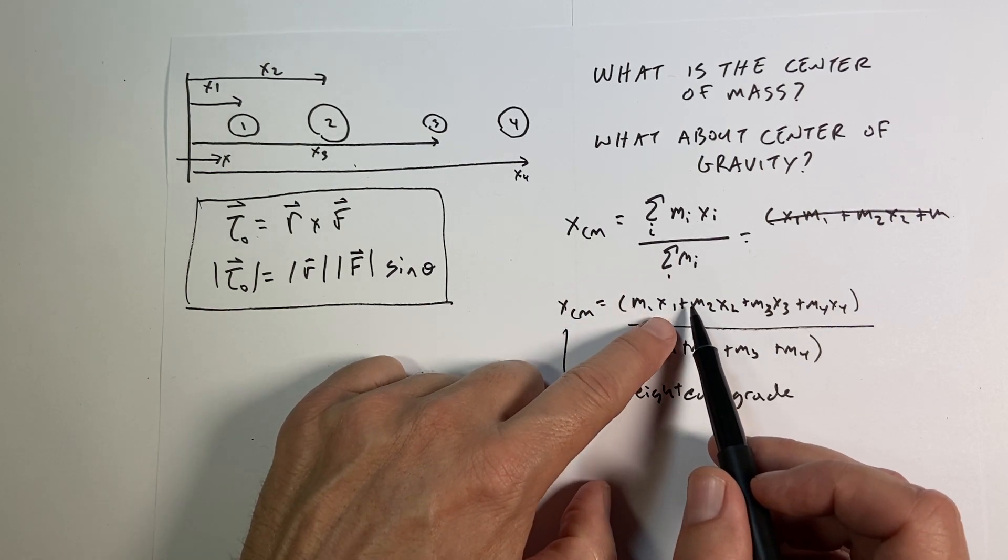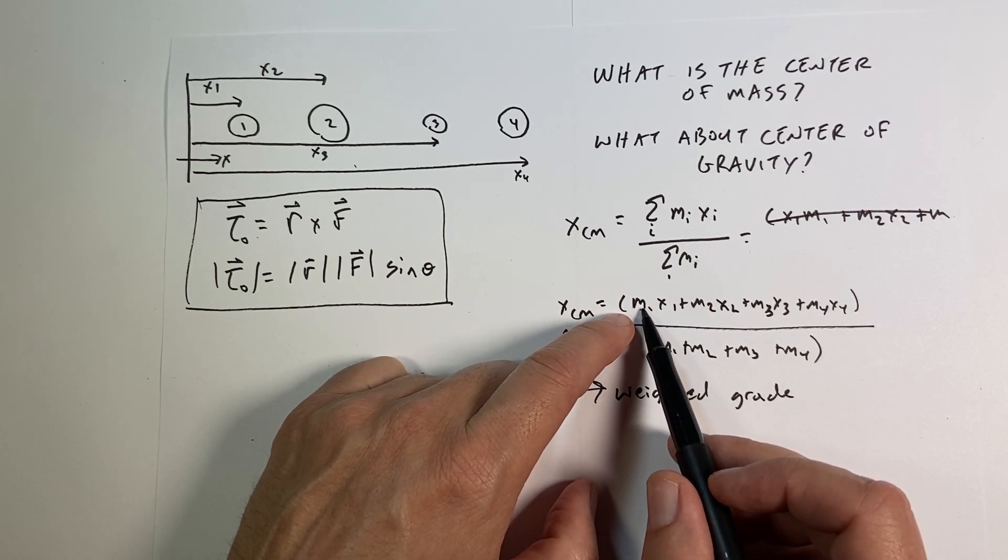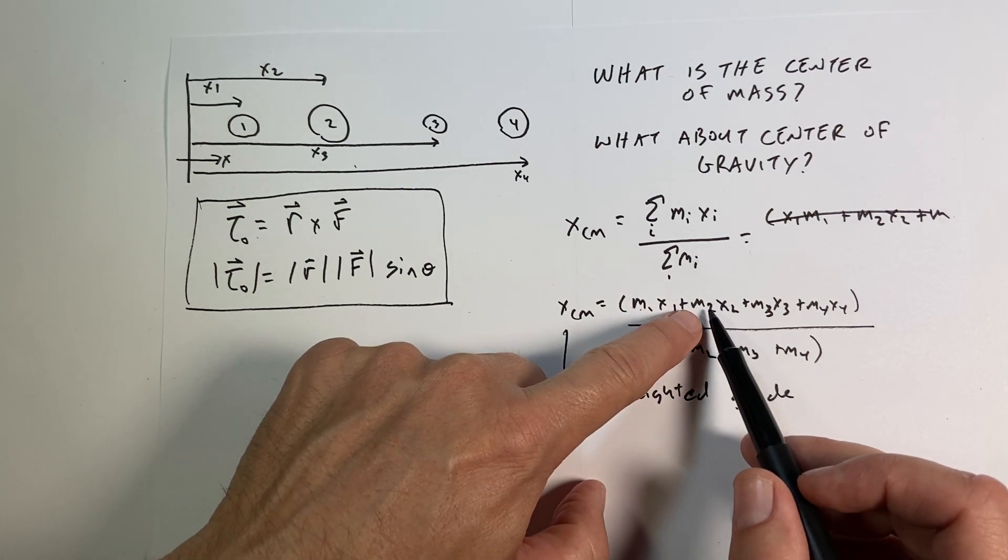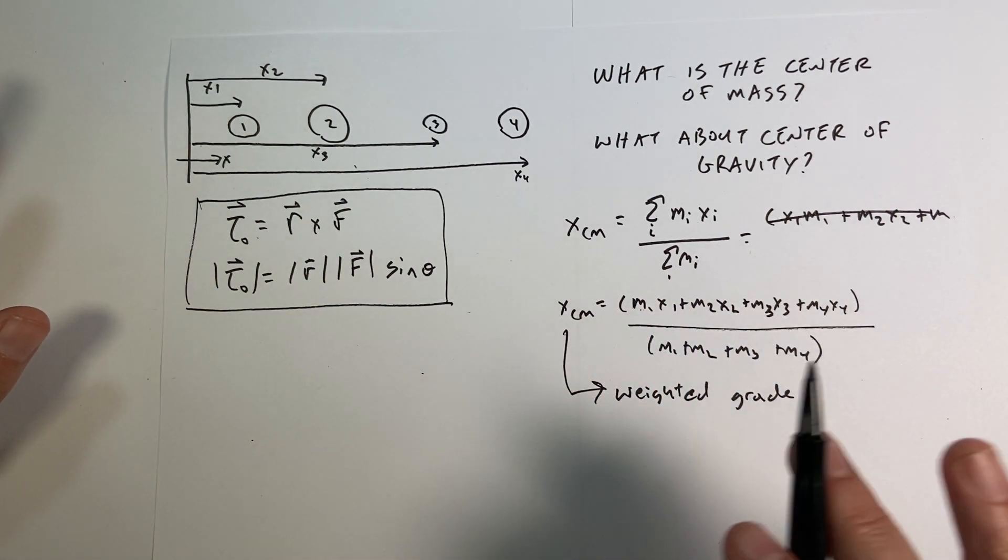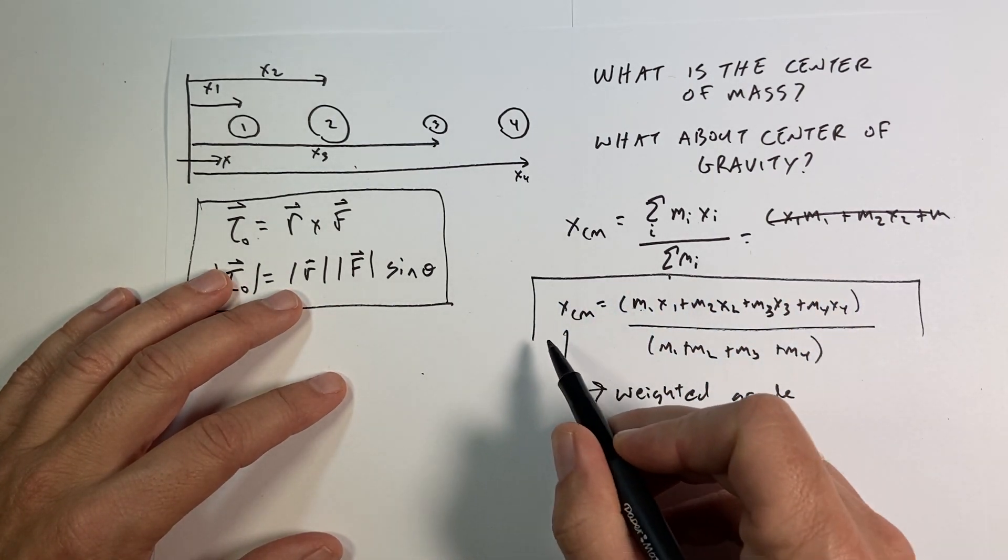It's the same thing here. Use the weighted average, right? So you're taking the values, your averages, times the weight. So if it's 30%, it'd be 0.3 times your score there, plus 0.6 times the score, and so forth. It's the same thing. So this is defined as the X center of mass.